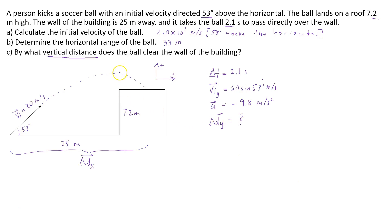If I find the vertical displacement, which is this distance, it's the distance the ball is above the ground when t is equal to 2.1 seconds. Then what I can do is I can take that distance and subtract 7.2 from it, the height of the wall. And then I'll know the vertical distance by which the ball clears the wall.